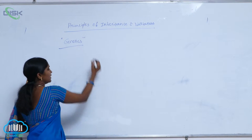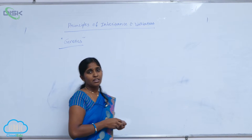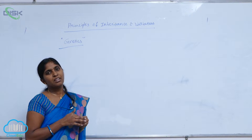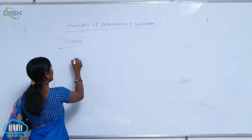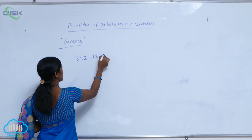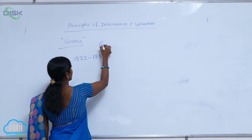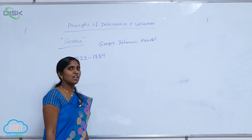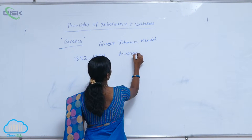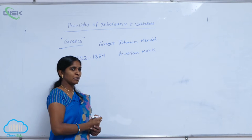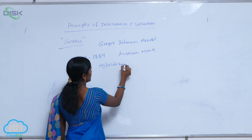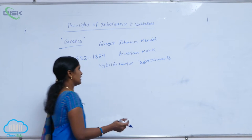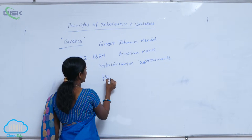These two - inheritance and variation - are included in one branch of biology called genetics. The word 'genetics' was given by the scientist Bateson, and the word was popularized by the work of Mendel. Mendel is a scientist born in 1822 and died in 1884. His full name is Gregor Johann Mendel. He was an Austrian Monk who conducted hybridization experiments.